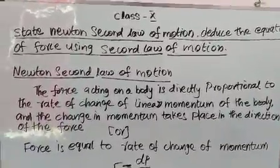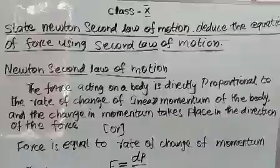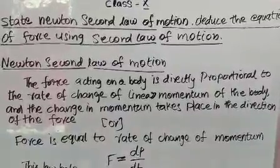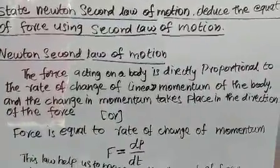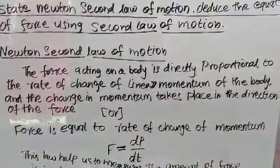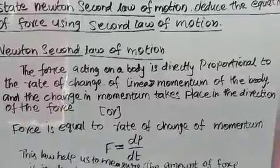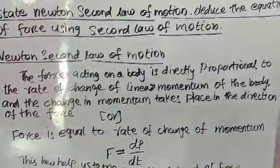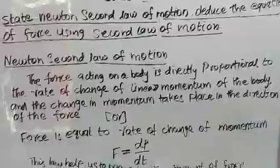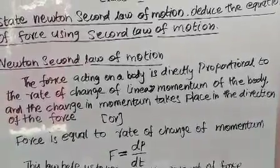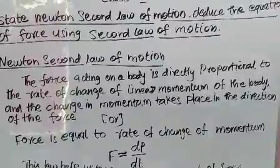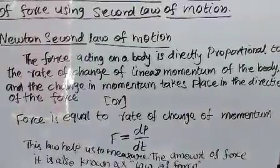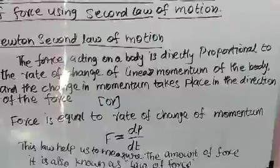Newton's Second Law of Motion states that the force acting on a body is directly proportional to the rate of change of linear momentum of the body, and the change in momentum takes place in the direction of the force. Another statement: force equals the rate of change of momentum, i.e., F = dP/dt, where dP/dt stands for momentum changing with respect to time. This law helps us measure the amount of force, and Newton's Second Law is also known as the Law of Force.